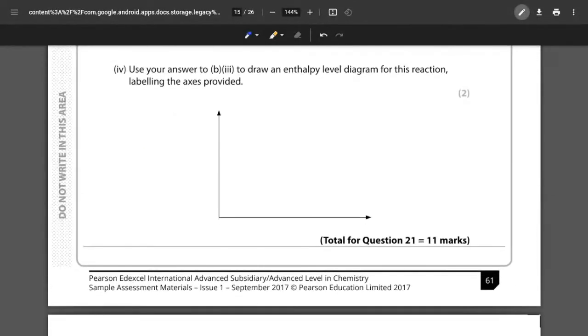Part four, the last part to this 11 mark question, is using the answer to part b, or using our enthalpy change, to draw an enthalpy level diagram for this reaction, labeling the axes provided. We know that it is an endothermic reaction because we said it was plus 91.6 kilojoules per mole. That must mean that our reactants are going to be a lower amount of energy than our products.